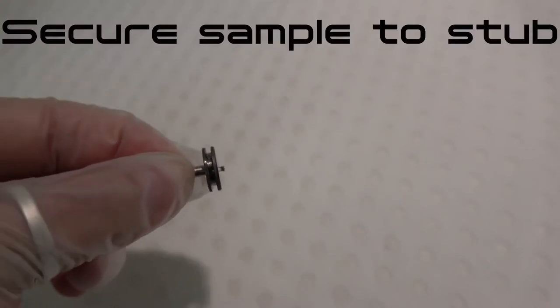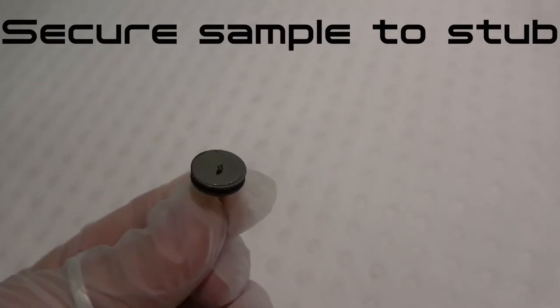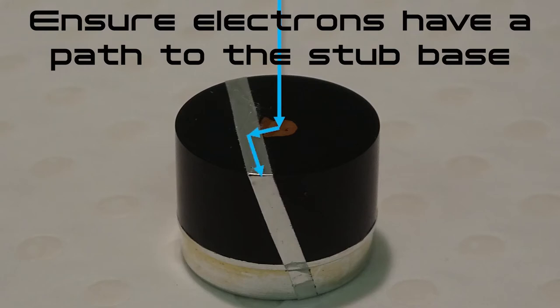When mounting samples for SEM, our main goals are to secure the sample to the SEM stub so that it does not move during examination in the microscope, and to ensure that the negative charge generated by the electron beam has a pathway away from the sample surface to the conductive stub base.